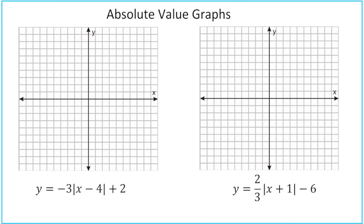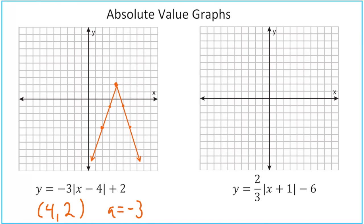Your turn to practice. For the first problem, we find our vertex: opposite of negative 4 is positive 4, don't change the positive 2, giving us vertex (4, 2). The a value is negative 3. Starting at (4, 2), with a slope of negative 3 that means down 3, right 1 — we can do that a couple of times. Then to make the V, we go down 3, left 1. Connect the dots, and that's the graph on the left.